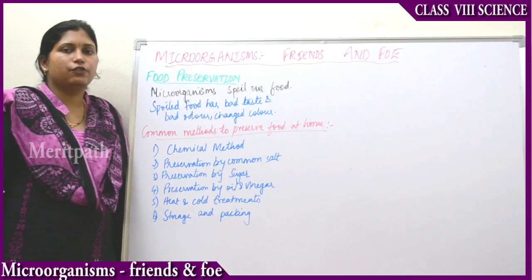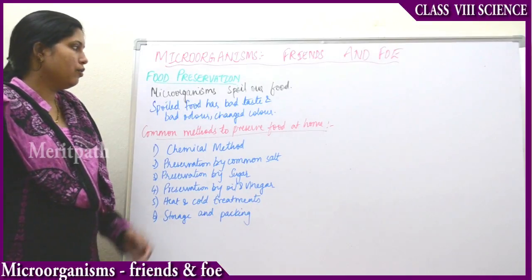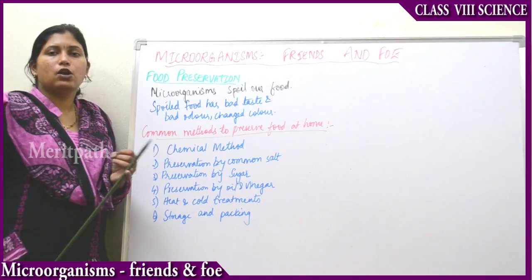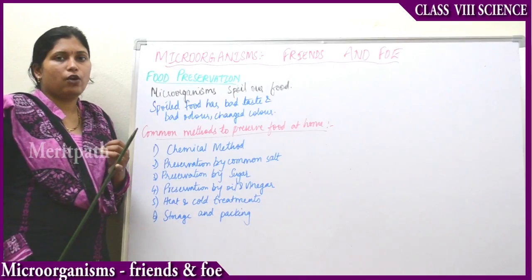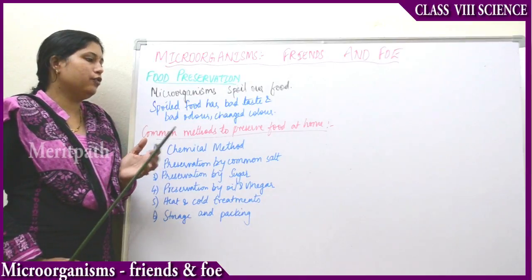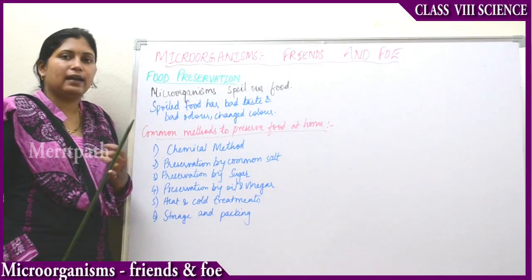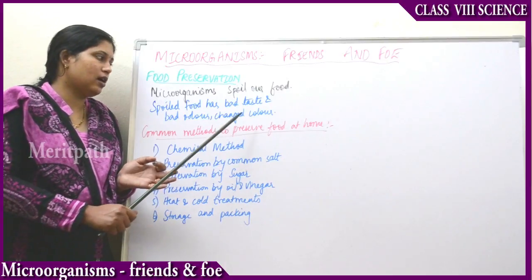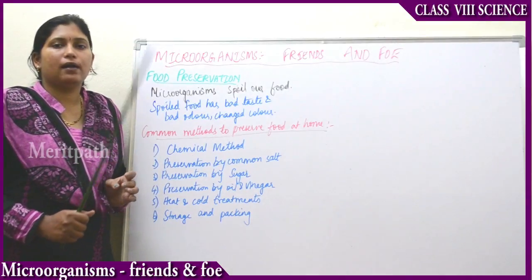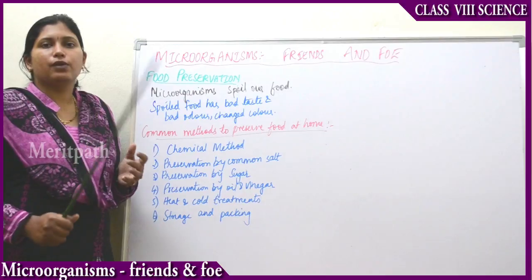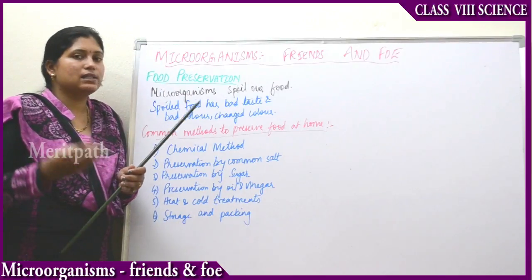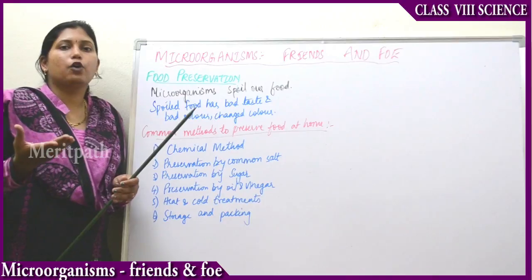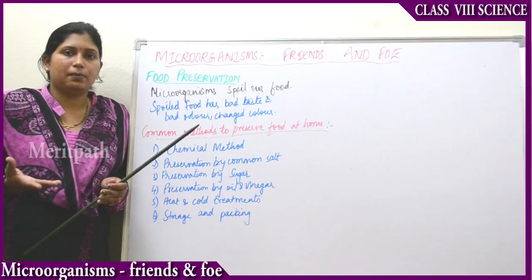Generally food is spoiled by microbes or microorganisms. Spoiled food has bad taste, bad smell, as well as changed colour. For example, if we keep bread outside for a few days without using it, we see green fungal growth on it — that is microbes developing on the bread.